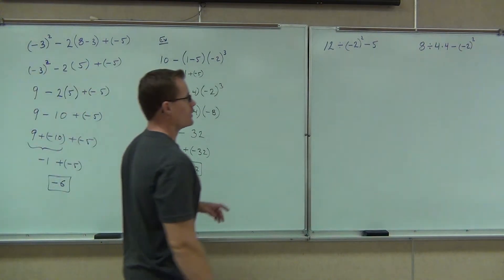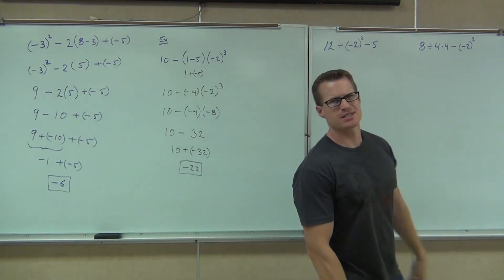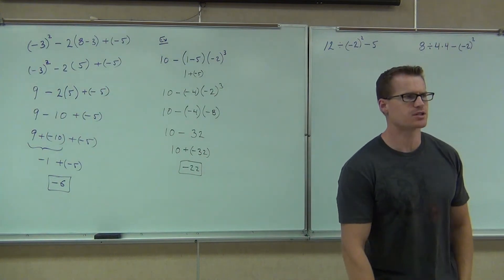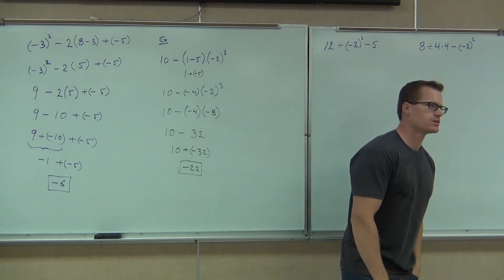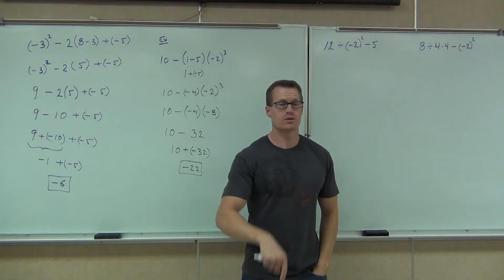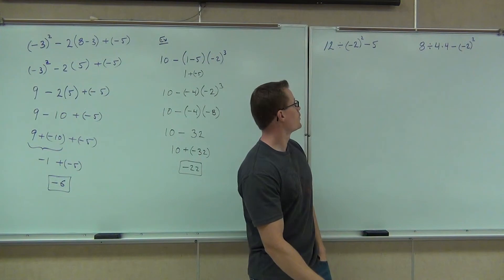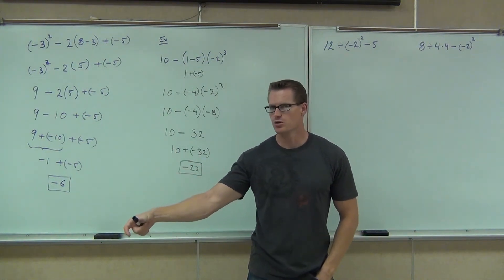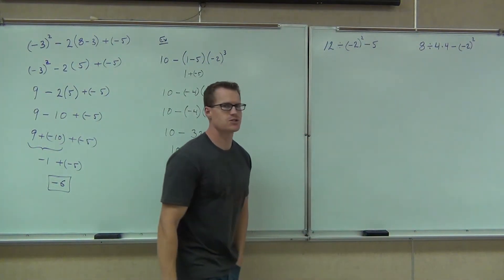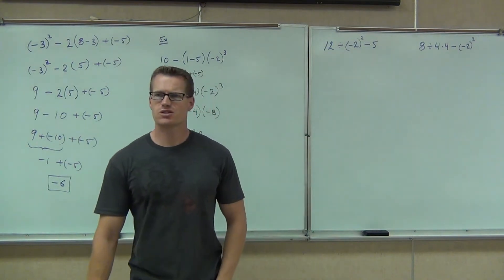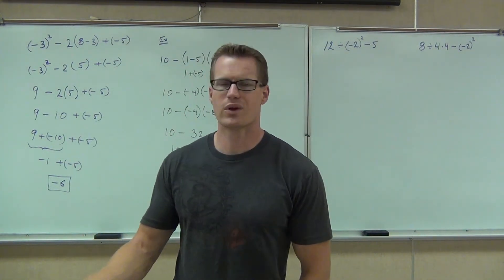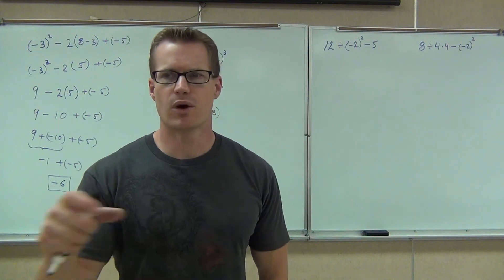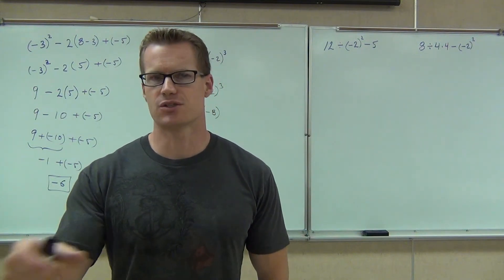Moving on here. On this example, do we have any parentheses that we're going to need to work on first? Parentheses. Exponents. We're going to leave the division alone, leave the subtraction alone. But those exponents — we have negative two squared. Here's the big ones we need to work on, really the even powers. Does the negative go with the two or not?